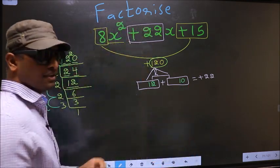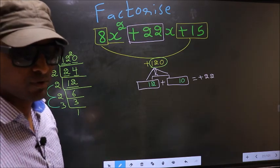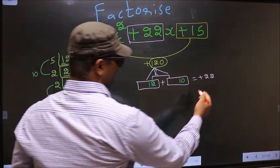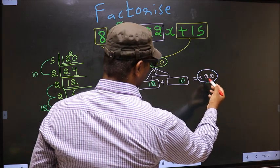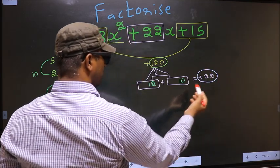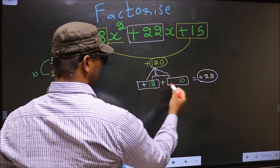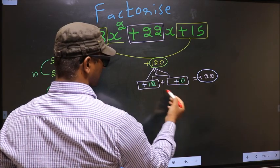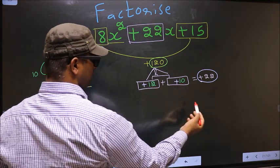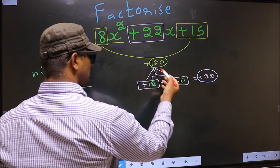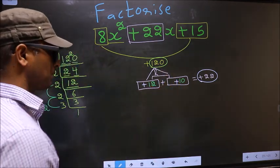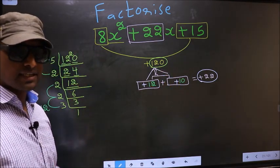Next, we should adjust the signs. What I mean is, over here we have plus 22. To get plus 22, we should put plus here and also here. Plus 12 plus 10 is plus 22. Plus 12 into plus 10 is plus 120. So we have adjusted the signs.